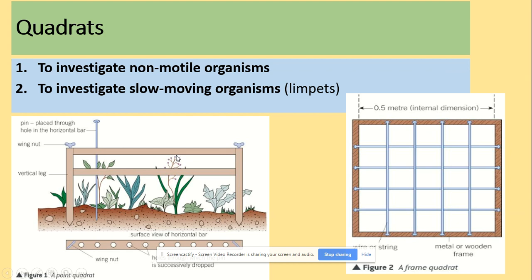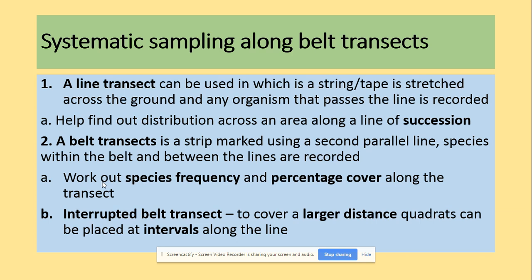So just a quick recap on quadrats. You could use quadrats to investigate non-motile organisms using a frame quadrat, or you could also use them to investigate slow-moving organisms using a point quadrat. For systematic sampling along belt transects, we could use a line transect — a string or tape stretched across the ground where any organism touching the line is recorded — to find the distribution across an area along a line of succession.